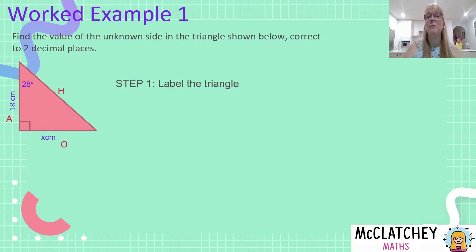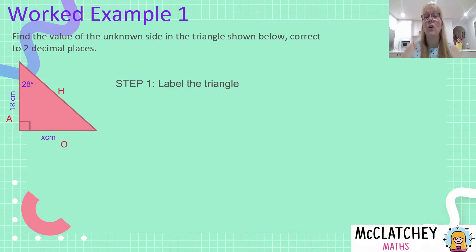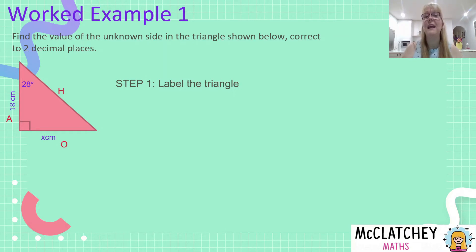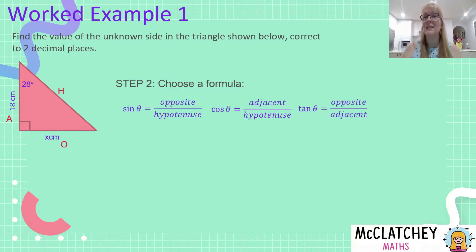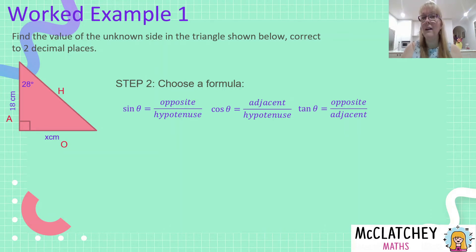We've been given information about our angle, the adjacent side, and we need to find the opposite. The hypotenuse is not going to help us at all here — it's not the unknown and gives us no relevant information — so we ignore the hypotenuse and focus on our opposite and adjacent. We ask: what do we have? What do we need? We have O and A, so we need TOA — that's our tangent formula.